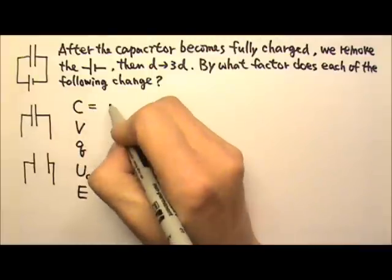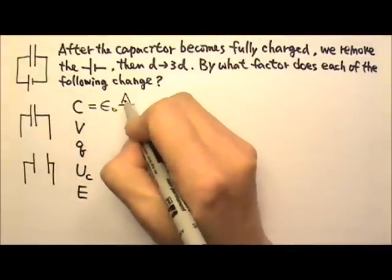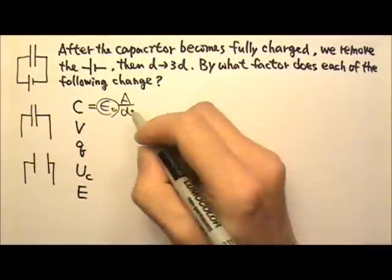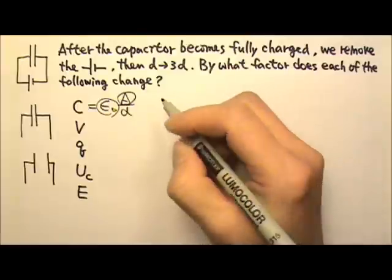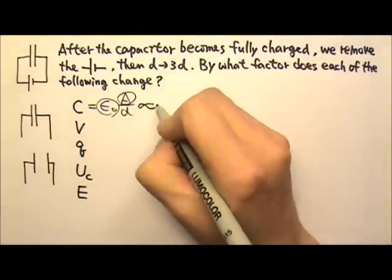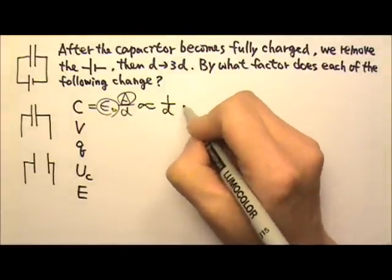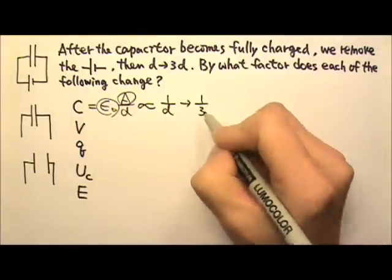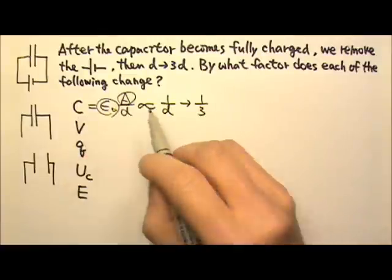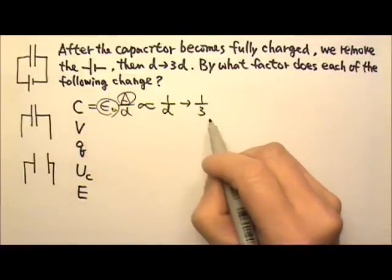The capacitance is epsilon naught A over D. Epsilon naught is always a constant and in this case the plate area doesn't change. So the capacitance is proportional to 1 over D. Since D triples, that means the capacitance will become one third of its original value.